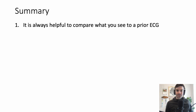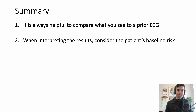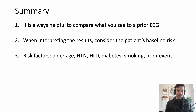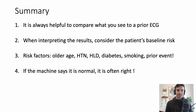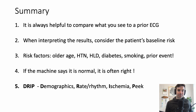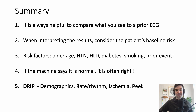Let's summarize what we talked about. It's always helpful to compare what you see to a prior ECG. When interpreting results, consider the patient's baseline risk — even if you see a normal ECG, if the patient is very high risk with bad chest pain, take that seriously. If the machine says it's normal, it's often right. And here's the DRIP mnemonic as an organized approach for the next time you're reading an ECG. I hope that helps — leave any comments for how I can make this better or for future videos. Thanks so much.